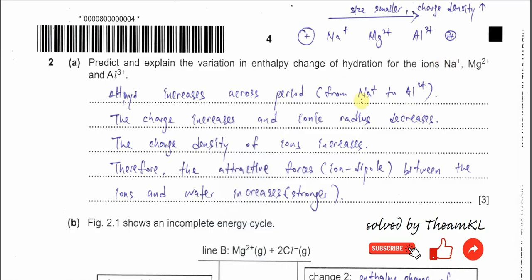From this trend, we know it is across the period — from sodium to magnesium to aluminium ions. Across the period, the size gets smaller and the charge increases: sodium is 1+, magnesium is 2+, aluminium is 3+. So the charge density increases, meaning the attraction of these gaseous ions to water is stronger. The aluminium ion will form stronger attractions with water, release more energy, and it is more exothermic.